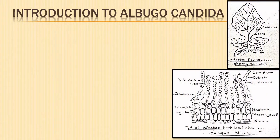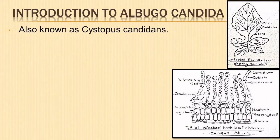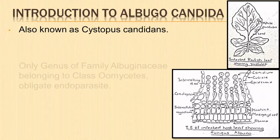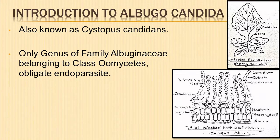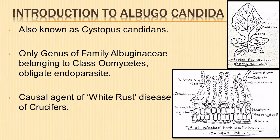Albugo candida is also known as Cystopus candidans. Albugo is the only genus of the family Albuginaceae, belonging to class Oomycetes. It is an obligate endoparasite distributed all over the world. The fungus is the causal agent of white rust disease of crucifers.